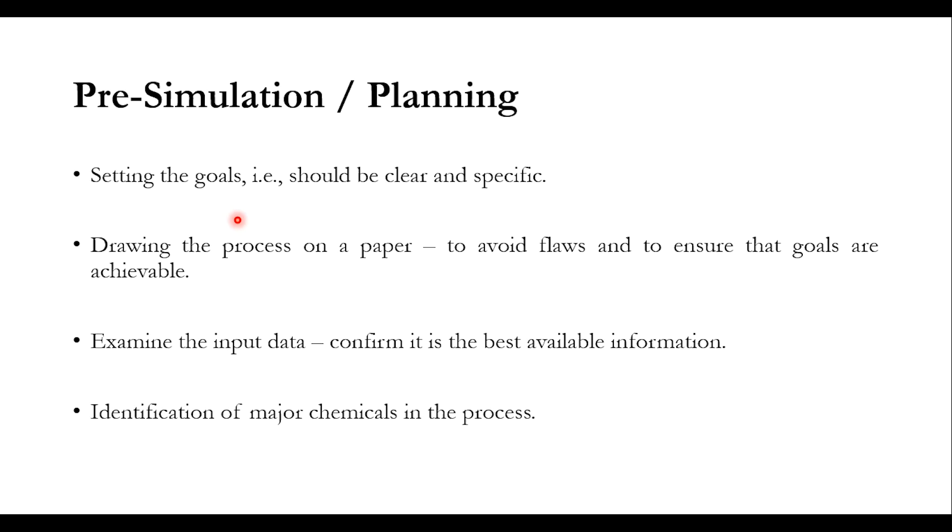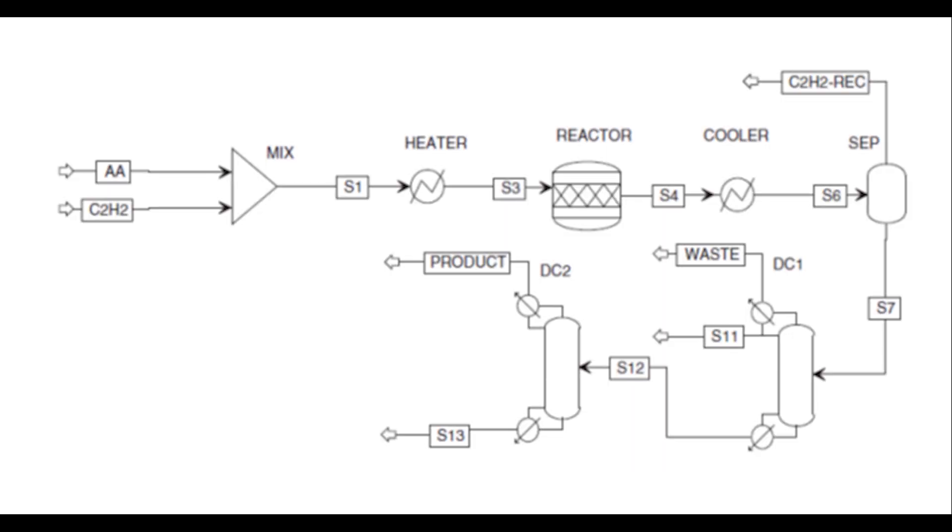Number one is pre-simulation or planning. Setting the goals should be clear and specific. For example, needing 99.9 weight percent purity of ethanol or 1000 tons per day of a certain product. Then, draw the process on paper to avoid flaws and ensure goals are achievable. Sketch the arrangement of equipment, pressure, and temperatures. If you can put down all possible parameters and sketch a process, it's easy to visualize and start with.